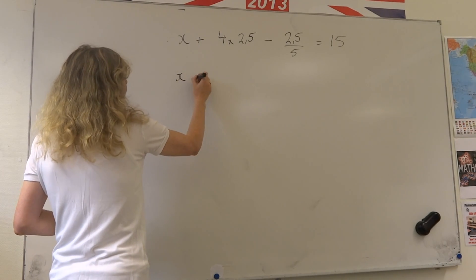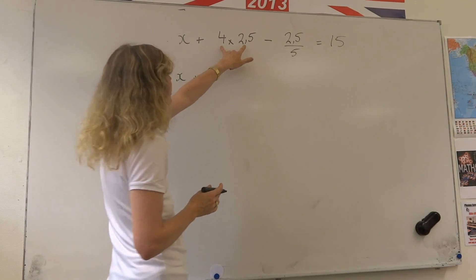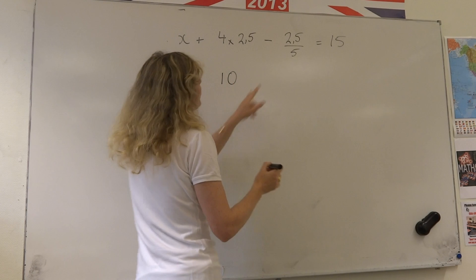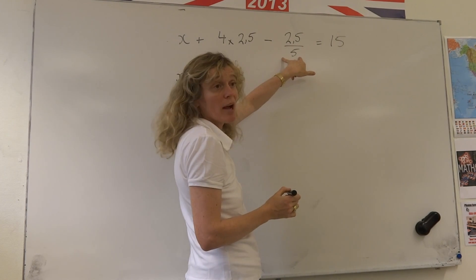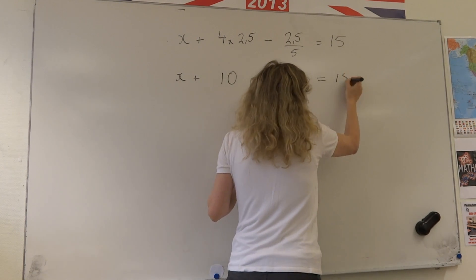4 times 2 and a half, that would give us 10. 2 and a half divided by 5, that would give us a half equals 15.